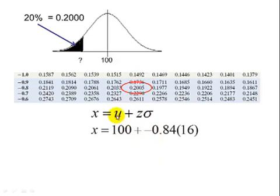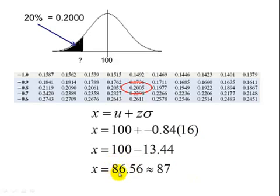Substituting our values in the formula, mu is 100. Our z that corresponds to the bottom 20% is a negative 0.84, and then we multiply that by our standard deviation 16. So this is the same thing as 100 minus 13.44, and we get 86.56, which rounds to an 87. So the IQ score that separates the bottom 20% from the top 80% is 87. That's great.